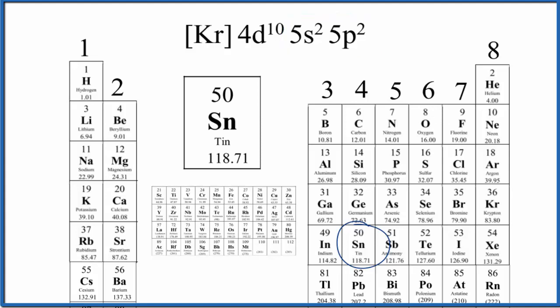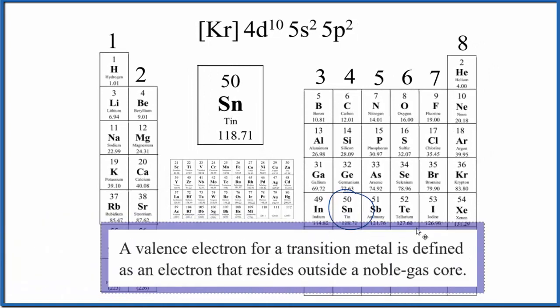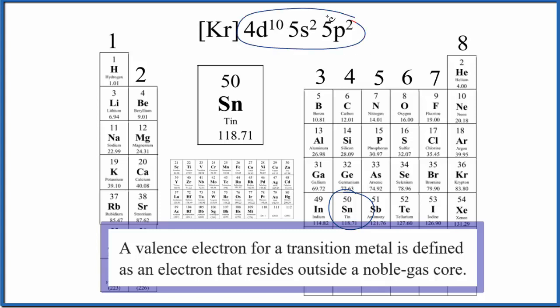There is a definition for transition metals, and I assume this applies to post-transition metals, and that's that we count the valence electrons as the electrons outside the noble gas core. So you could, based on that definition, say that all of these are valence electrons.